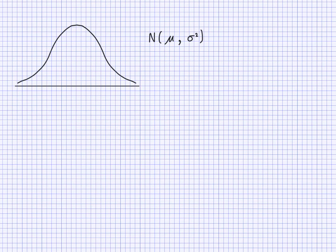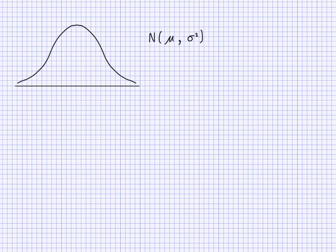Other things about the normal distribution: you need to know that the mean, median, and mode are about the same, or they are the same. And we can work out probabilities because for things that are normally distributed, there is a certain proportion within one standard deviation, two standard deviations, or three standard deviations.